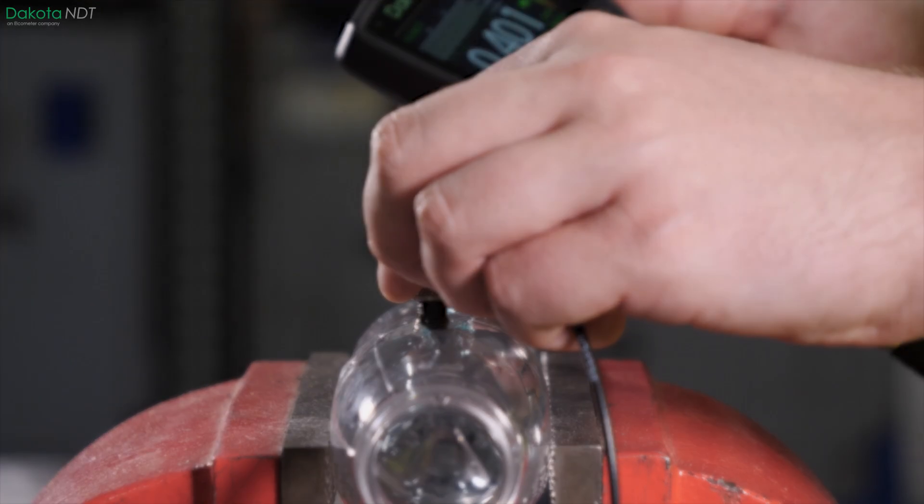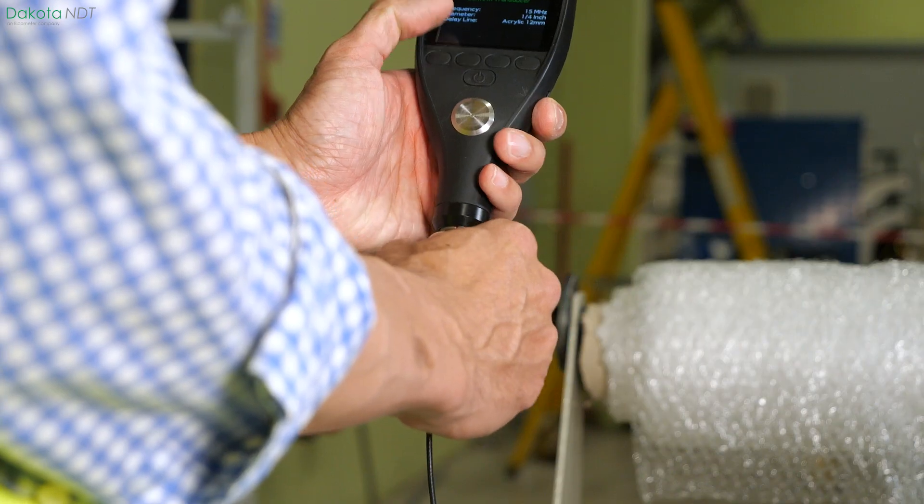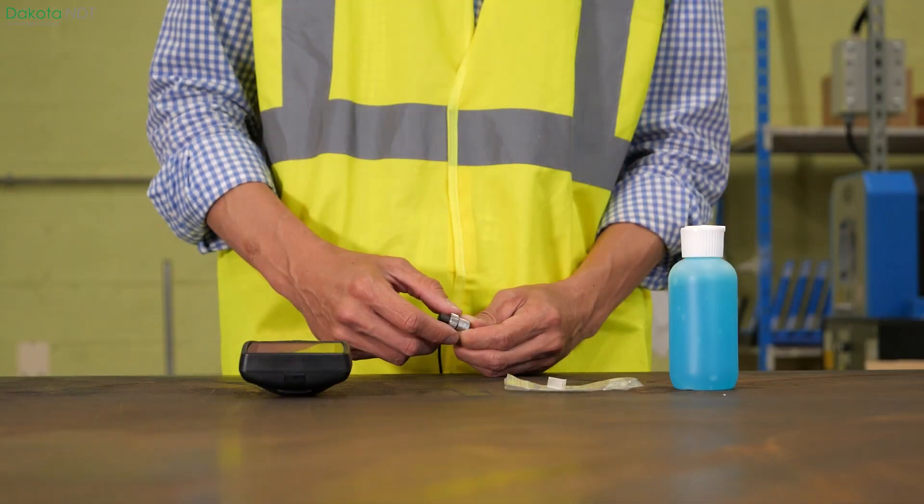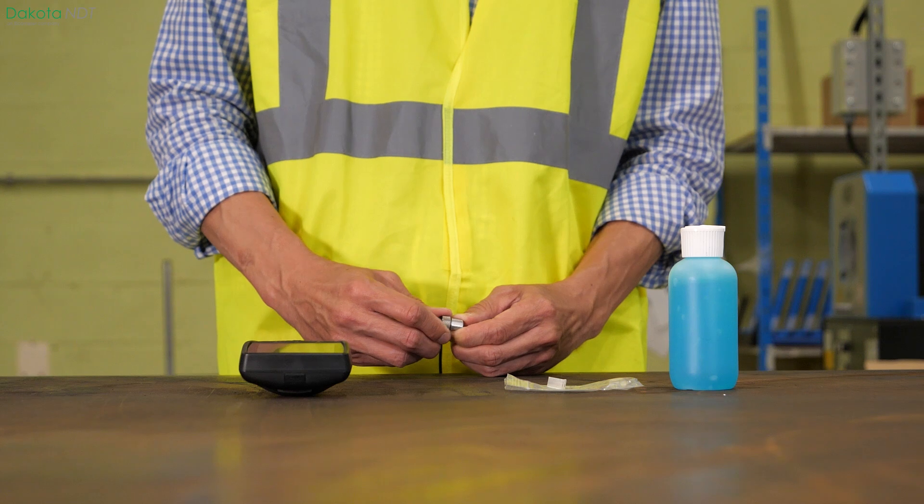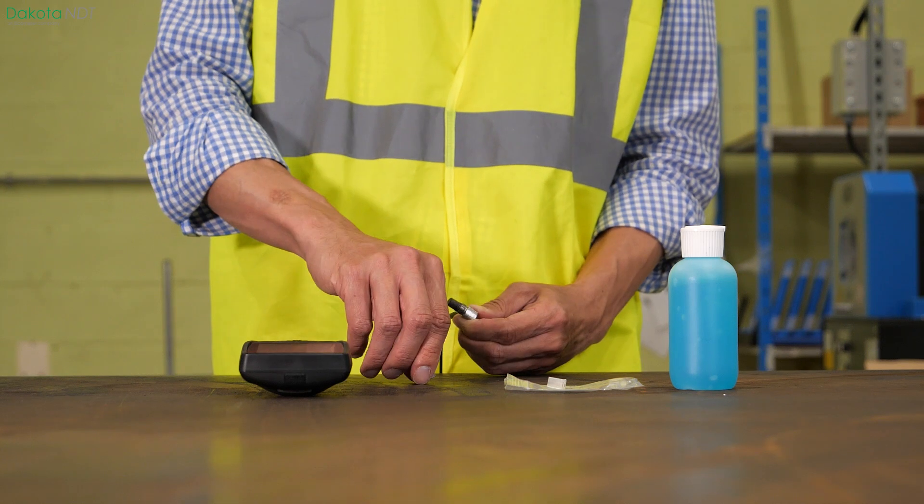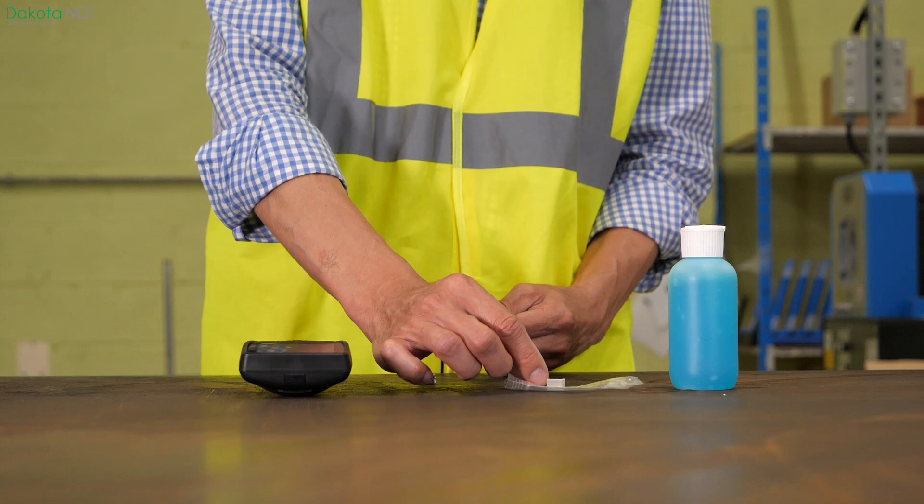So, how do you change delay lines? With the transducer disconnected from the gauge, unscrew the knurled collar and remove it, placing it in a safe place, followed by the delay line you are replacing.